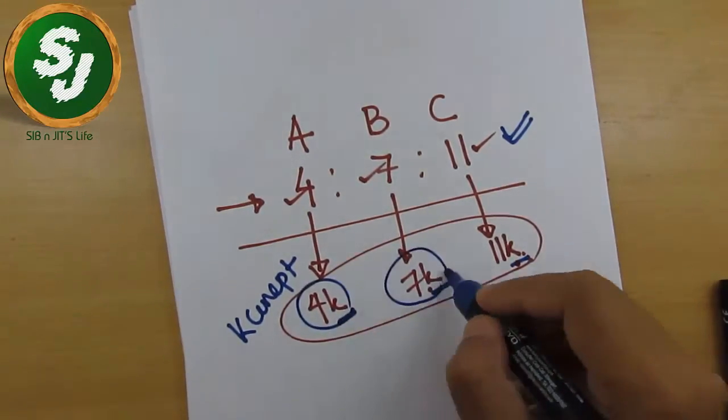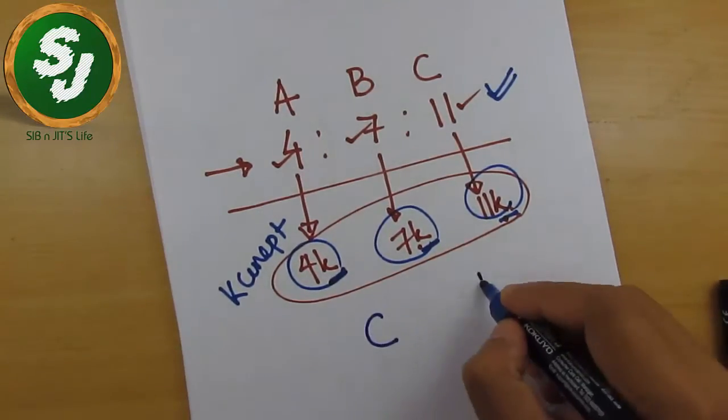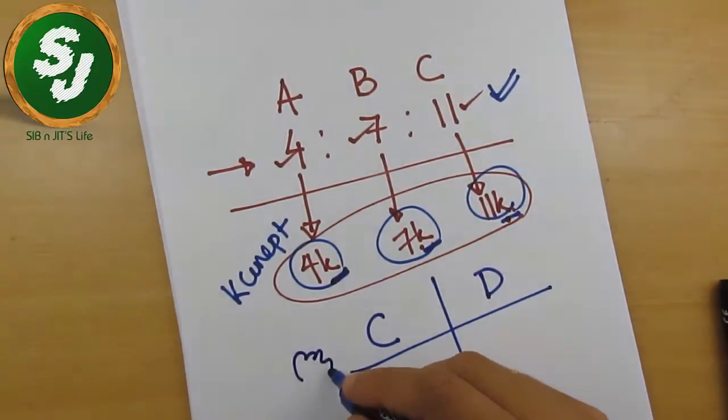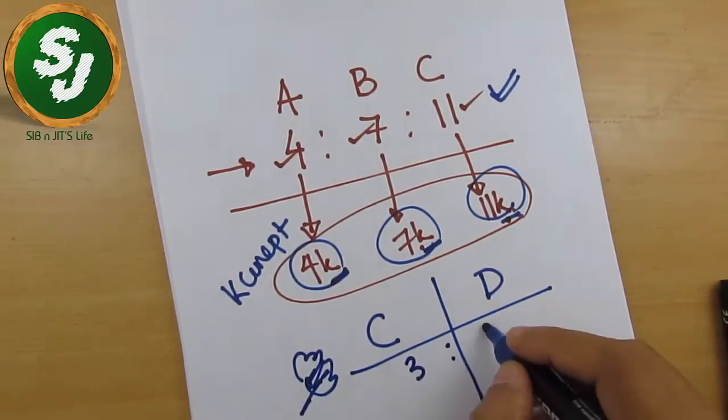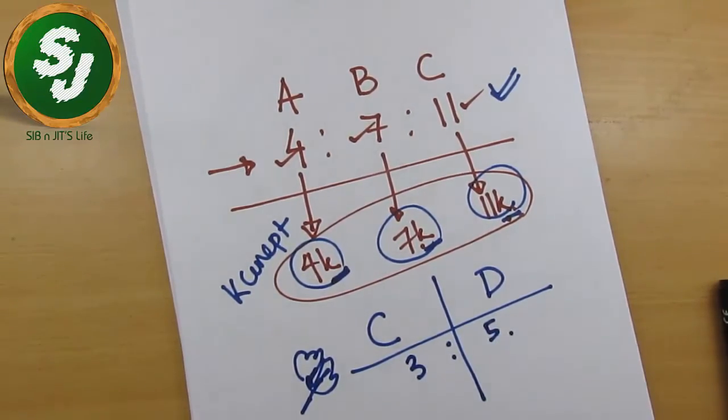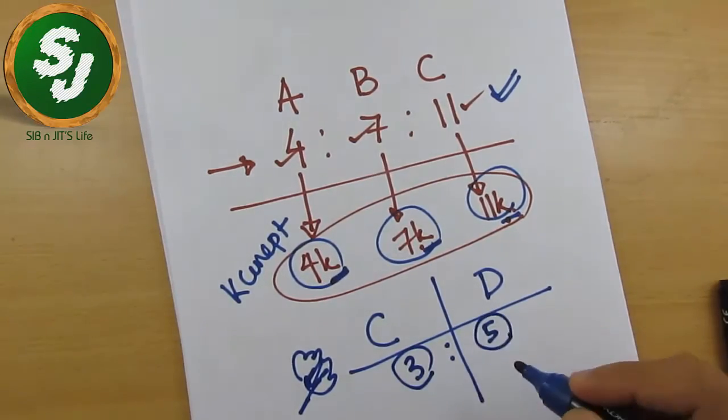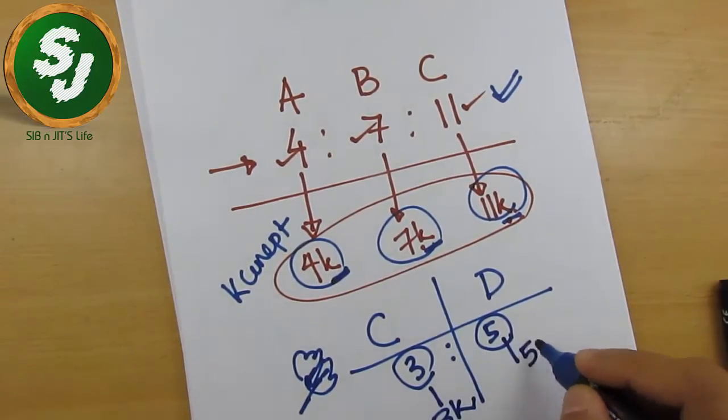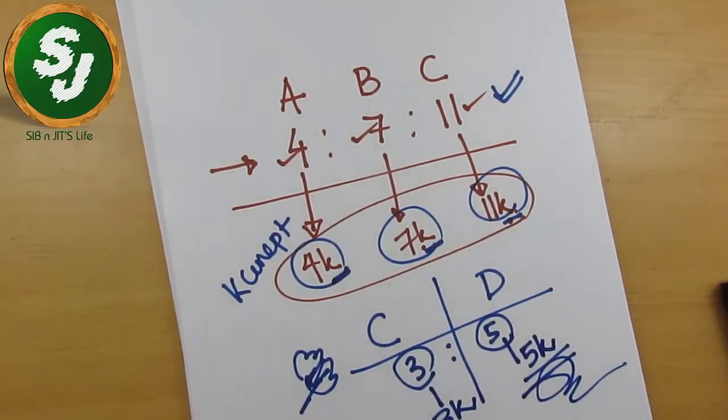Another example: for example, let's say there are two sellers C and D. The amount of oranges which they have is 3 is to 5. So how many oranges does C have? You cannot say that C has three oranges. You cannot say that D has five oranges. You should say that C has 3K oranges whereas D has 5K oranges.